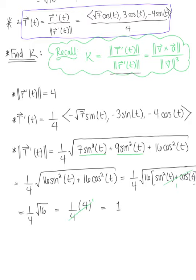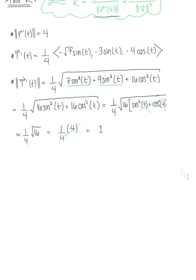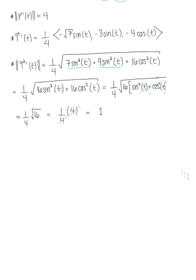We're now ready to find our curvature. The curvature is the magnitude of the rate of change of the unit tangent vector divided by the magnitude of the tangent vector, giving us 1 over 4. That is our final answer.